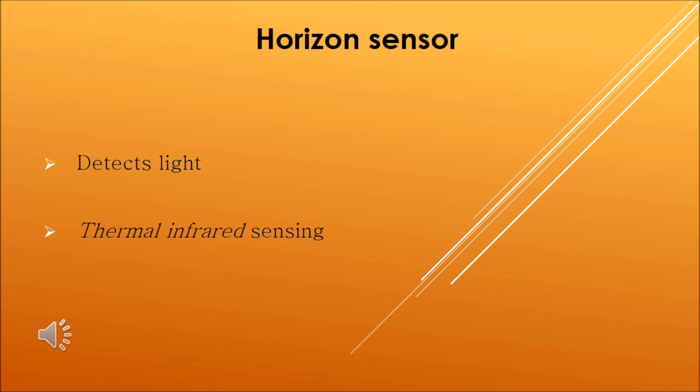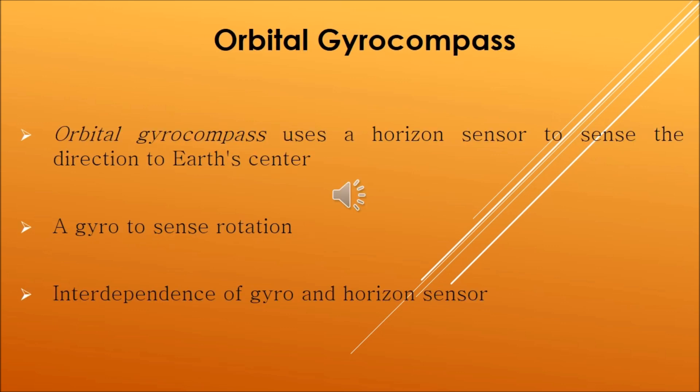A horizon sensor is an optical instrument that detects light from the limb of earth's atmosphere, that is at the horizon. Thermal infrared sensing is often used, which senses the comparative warmth of the atmosphere compared to the much colder cosmic background.